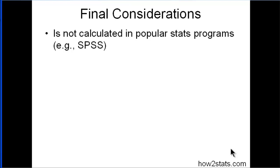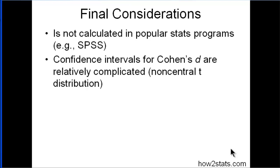I'm going to create a calculator on the HowToStats website so that you can calculate Cohen's D and Hedges G and get those estimates in a matter of seconds, just putting that into the spreadsheet that I'm going to upload.